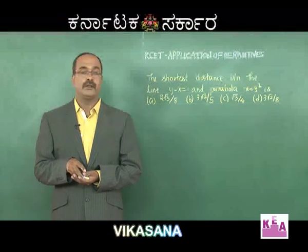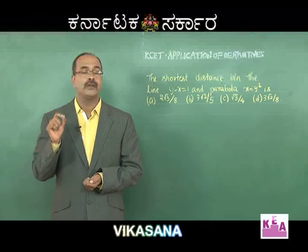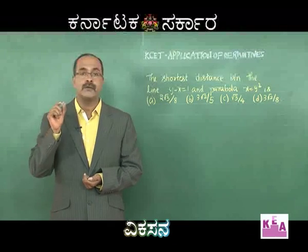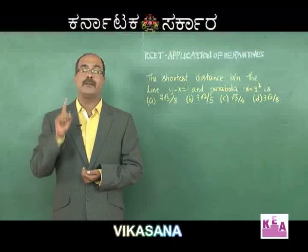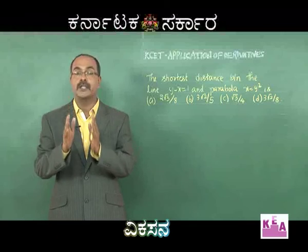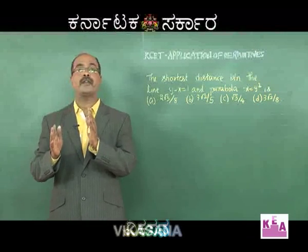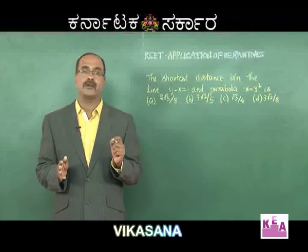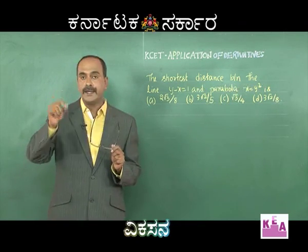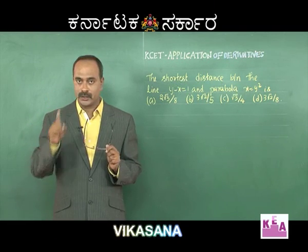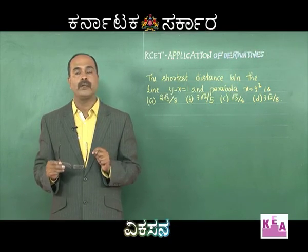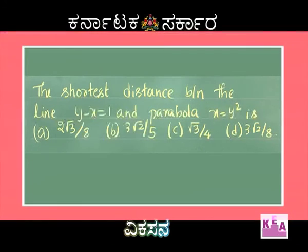Dear students, using maxima and minima we can solve problems of shortest distance between a curve and a line. Sometimes we can avoid that by using the basic formula: (ax₁ + by₁ + c) / √(a² + b²), which gives the distance of point (x₁, y₁) from the line ax + by + c = 0.